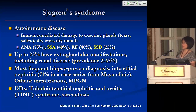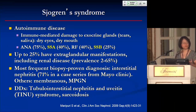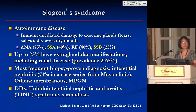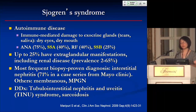Sjögren's syndrome is an autoimmune disease — immune-mediated damage to the exocrine glands causing dry eyes and dry mouth. The ANA is nonspecifically positive in about 75% of cases, and rheumatoid factor in 40%. SSA and SSB antibodies are most specific to the diagnosis of Sjögren's. However, a negative SSA or SSB does not rule out Sjögren's — SSA is only positive in 40% of cases and SSB in 25%.